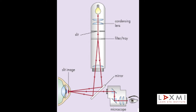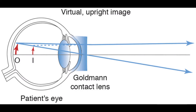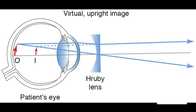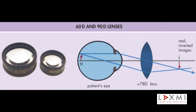Replacement of 45 diopters of corneal surface refractive power by an afocal plane surface, e.g. Goldman lens. Neutralization of the refractive power of the eye, i.e. 60 diopters, e.g. Ruby lens. Use of indirect ophthalmoscopy principle with slit lamp, e.g. 60 diopter, 90 diopter, or 78 diopter lenses.